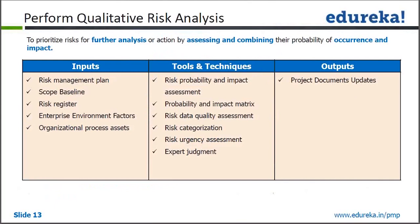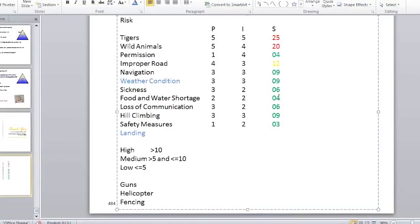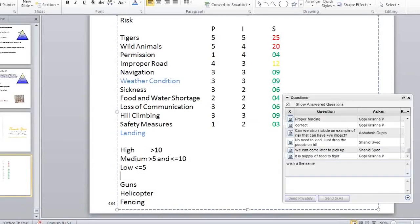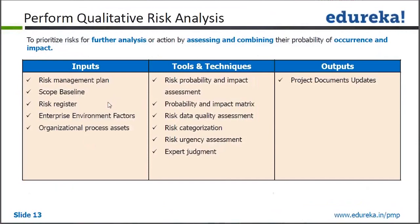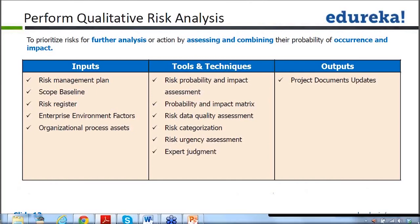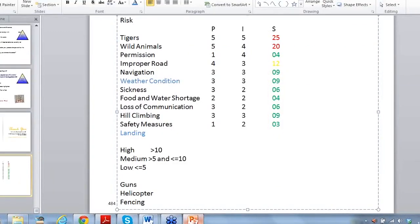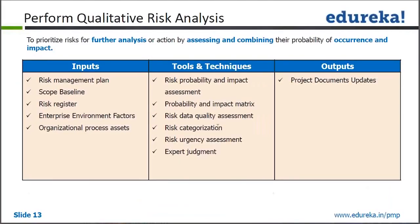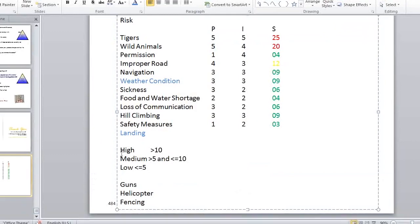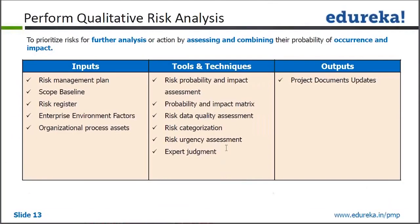The next step after identification is qualitative analysis. What we did — putting values and creating a risk score — is called qualitative analysis. Inputs are risk management plan, scope baseline, risk register, EEF, and OPA. Tools and techniques include risk probability and impact assessment, probability and impact matrix, data quality assessment, risk categorization (high/medium/low), risk urgency assessment, and expert judgment. The output is a project document update. In most projects, qualitative risk analysis is sufficient — we do not always need quantitative risk analysis.